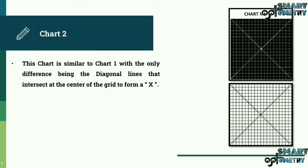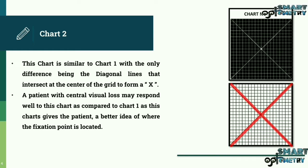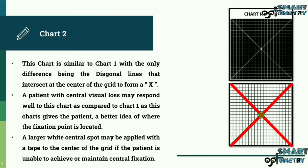Chart 2. This chart is similar to chart 1 with the only difference being the diagonal lines that intersect at the center of the grid to form an X. A patient with central visual loss may respond well to this chart as compared to chart 1, as this chart gives the patient a better idea of where the fixation point is located. A larger white central spot may be applied with a tape to the center of the grid if the patient is unable to achieve or maintain central fixation. Here you can see both the types of Amsler's chart with the diagonal lines that intersect at the center and form an X.